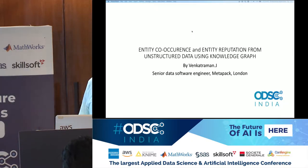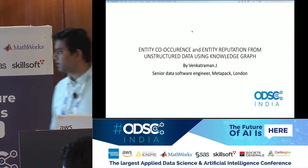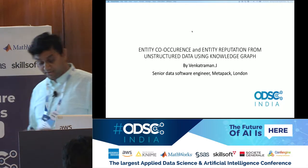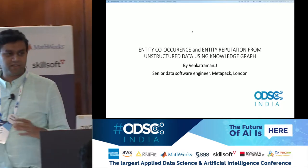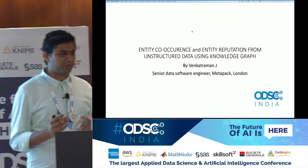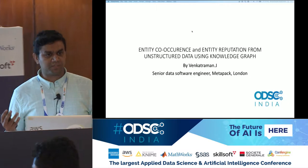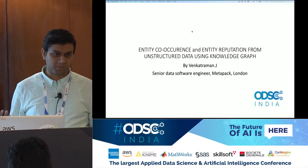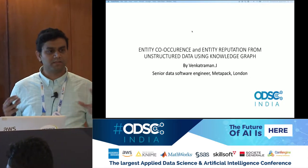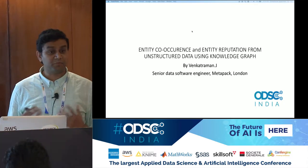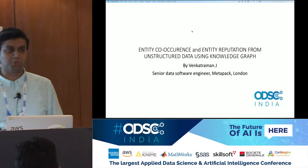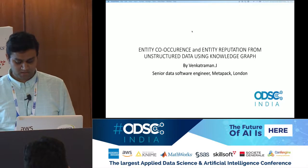The topic of my presentation today is entity co-occurrence and entity reputation from unstructured data. Co-occurrence means that in unstructured data, two entities can occur together. If you write a tweet and mention Nike and Adidas, they are occurring together in a corpus. Reputation is the scoring of how well an entity is performing in a graph — which node has the most popularity.